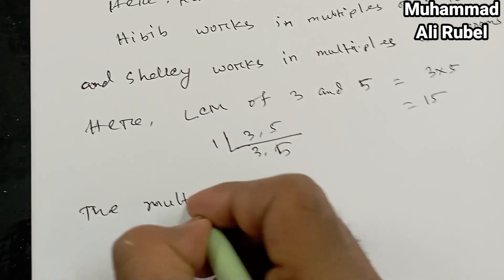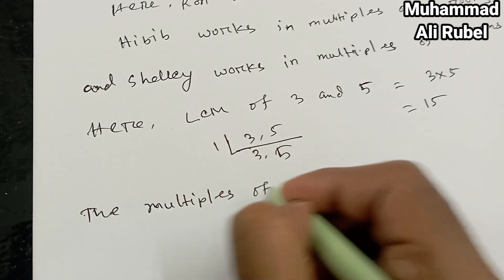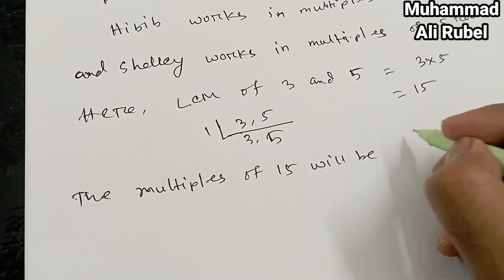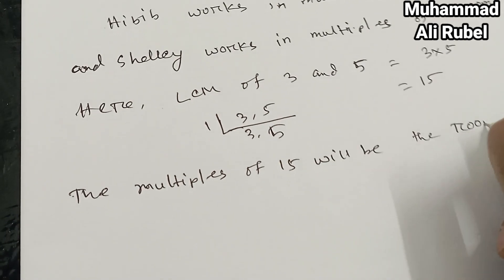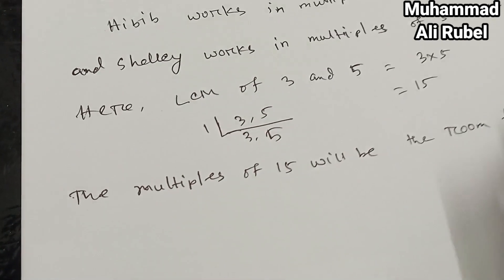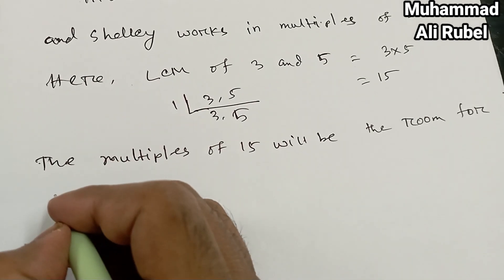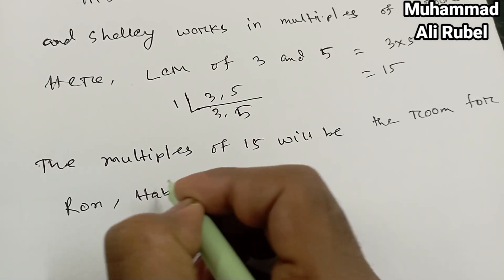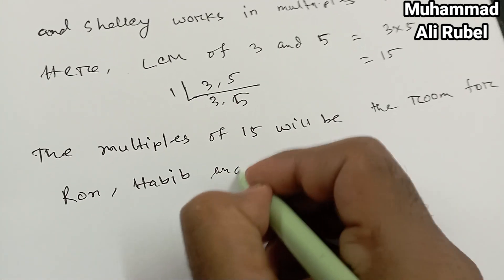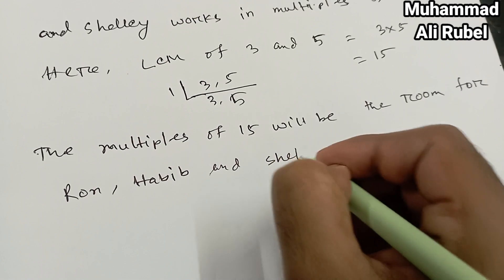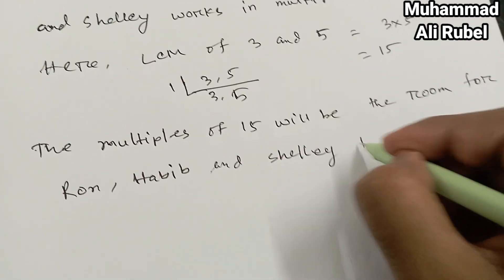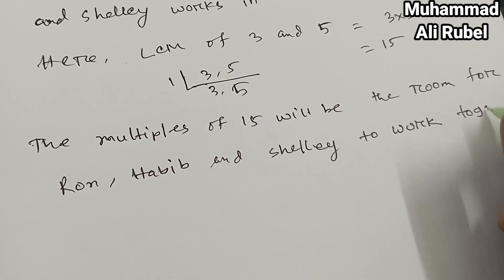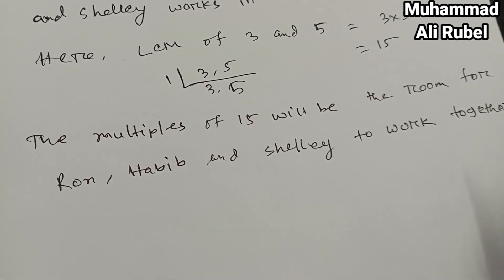The multiples of fifteen will be the rooms where all four work together. So Ron, Habib, and Shaili will all work together in the multiples of fifteen.